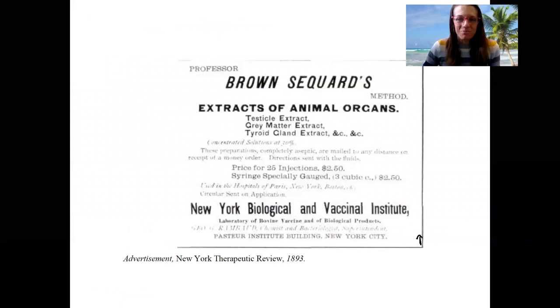This is also pretty funny. So this was from 1893. You could buy extracts of animal organs. You could buy testicle extract, gray matter extract, and a thyroid gland that we discovered had some effects on things. Not known quite what these things did, but it was known that testicle extract, now we know that's testosterone, that's actually doping. But you could buy it and inject it into yourself.